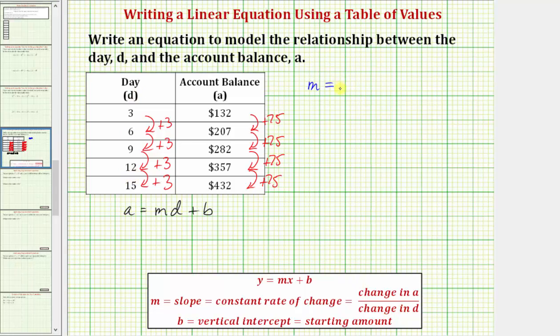And we often see a formula for slope. If we're using A and D, we would have A sub two minus A sub one divided by D sub two minus D sub one.